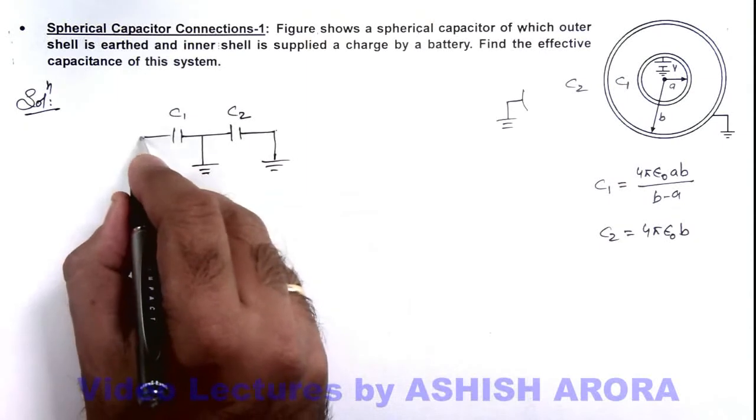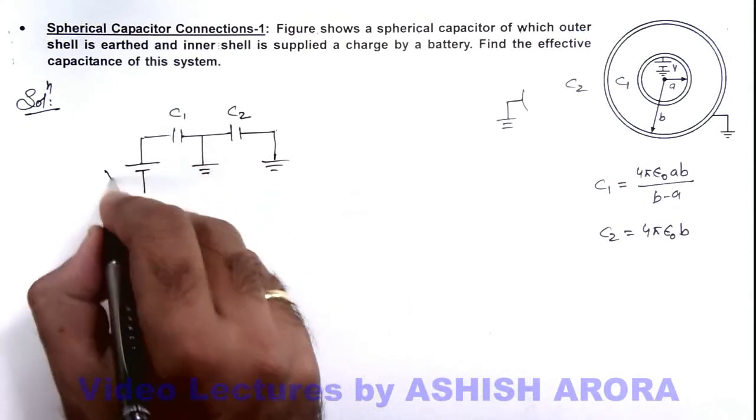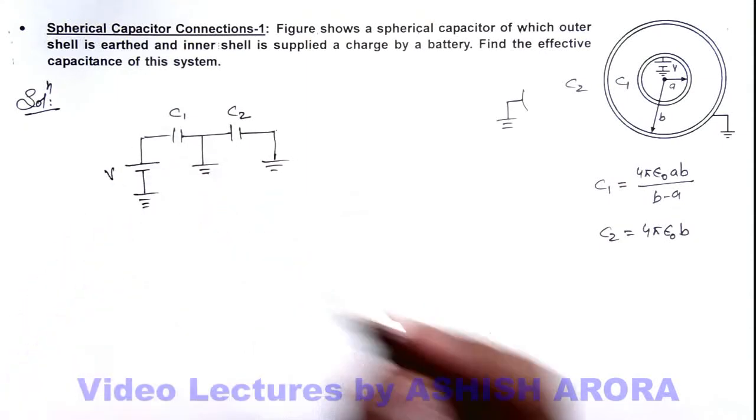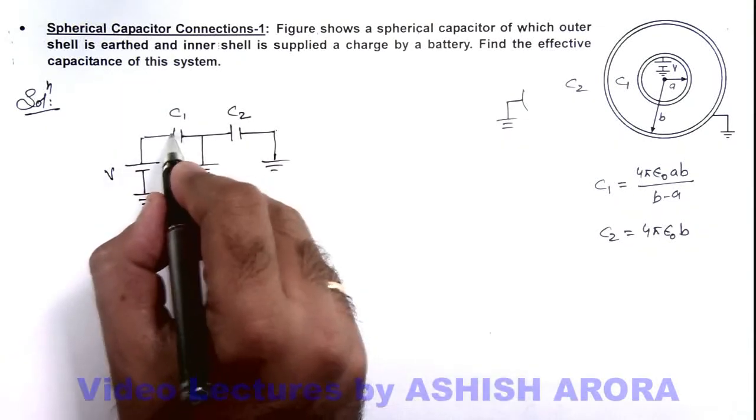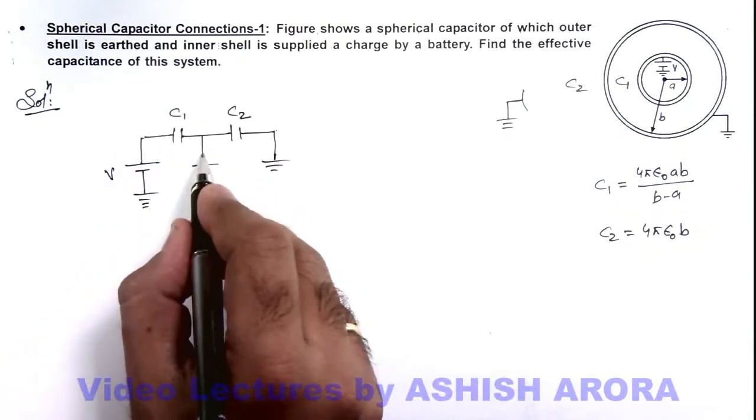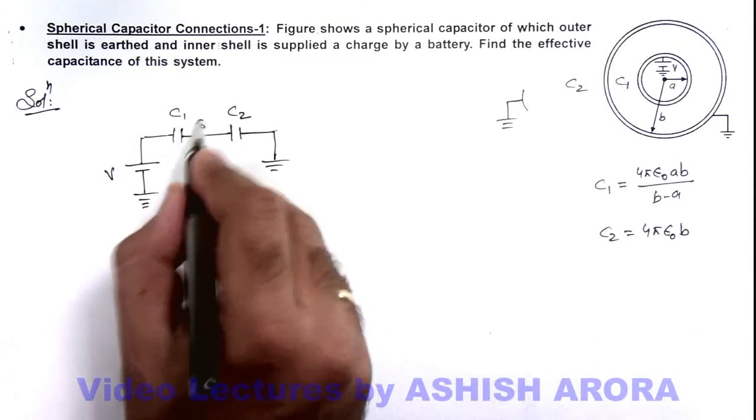For C1 there is a battery over here of voltage V which is connected to earth. So on one side of C1 potential is zero, on the other side its potential is V.